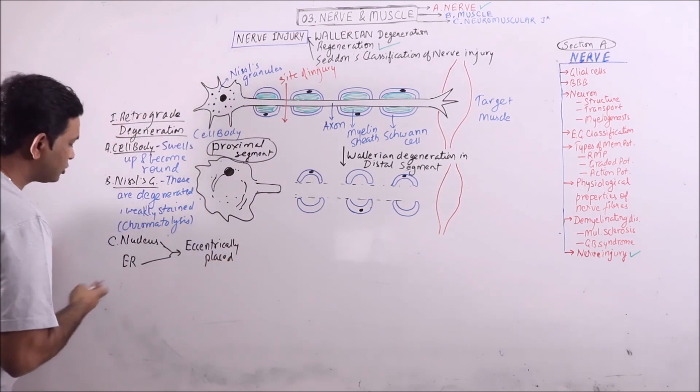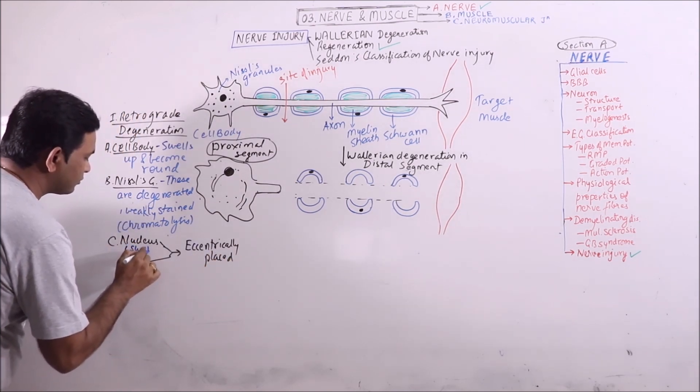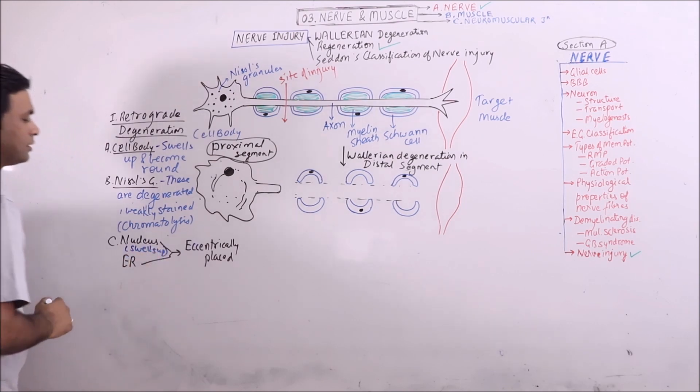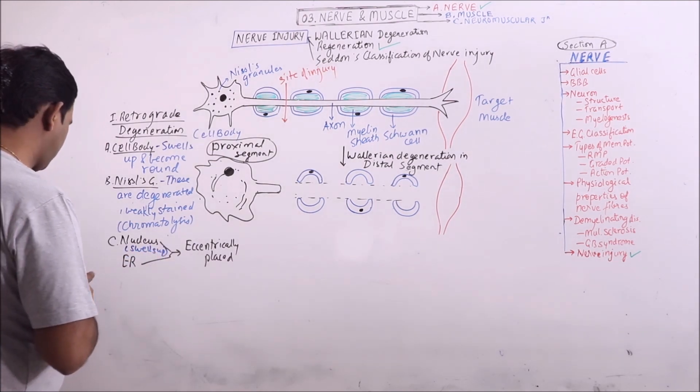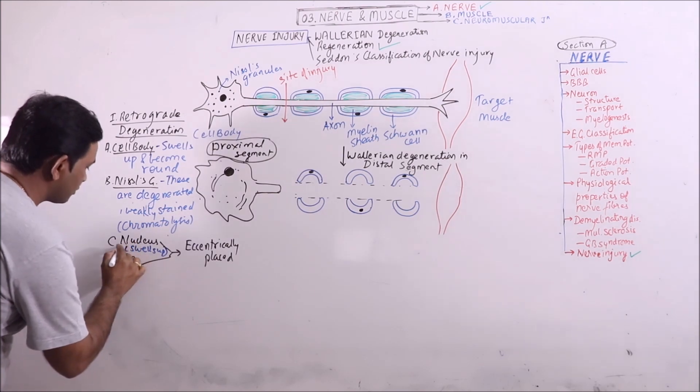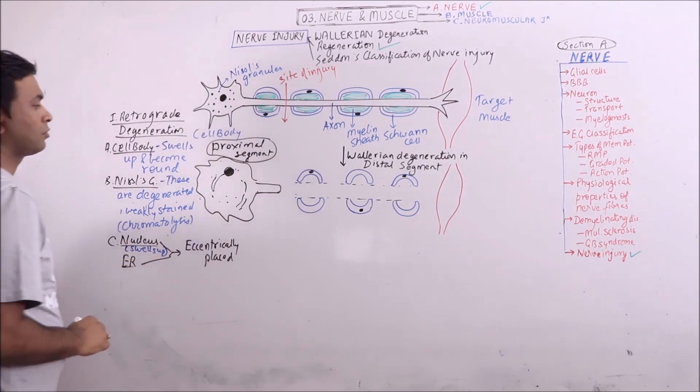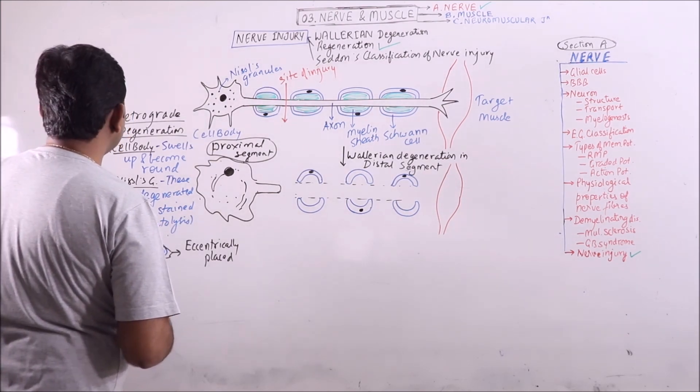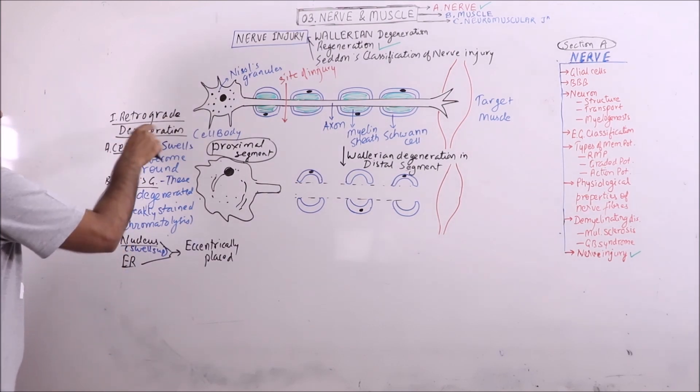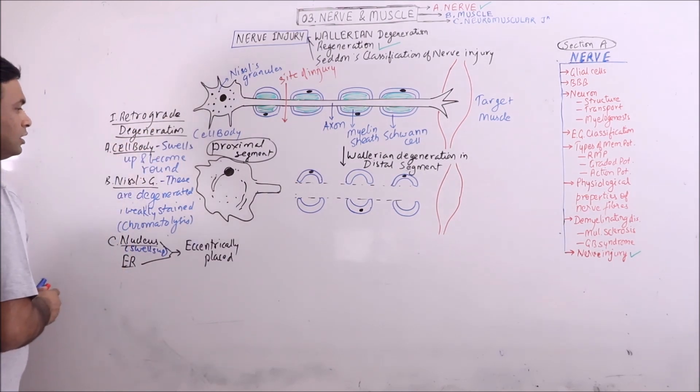Nucleus also shows swelling. It swells up. So these are the changes which occur in retrograde degeneration in the cell body.